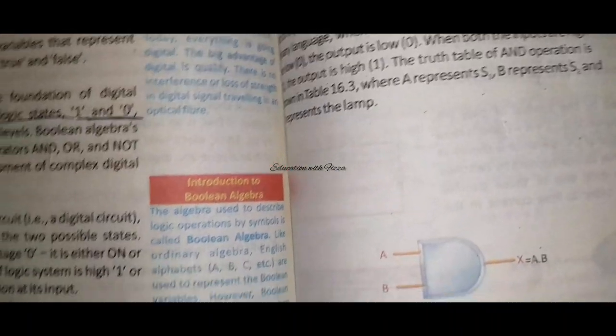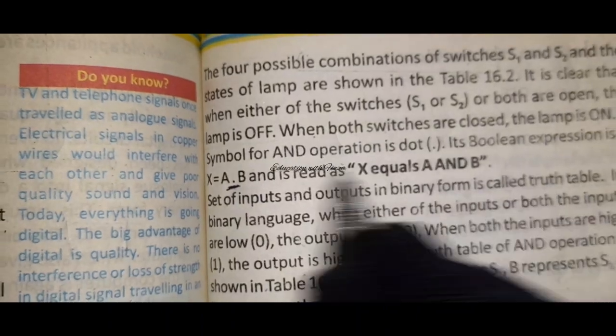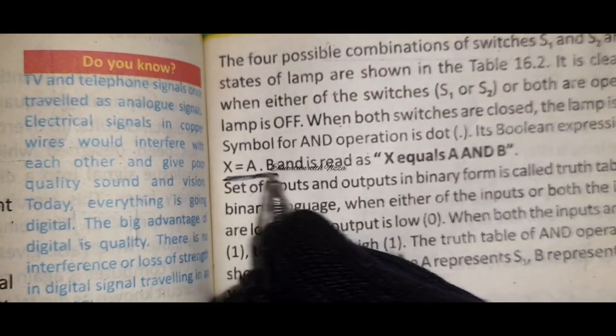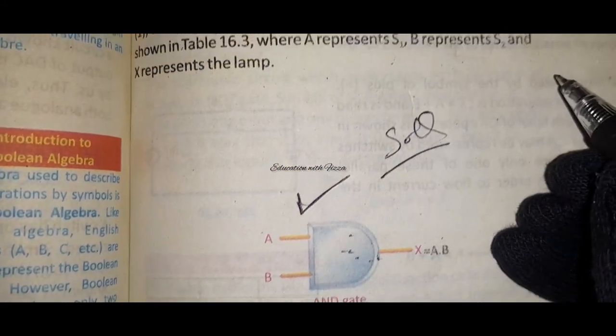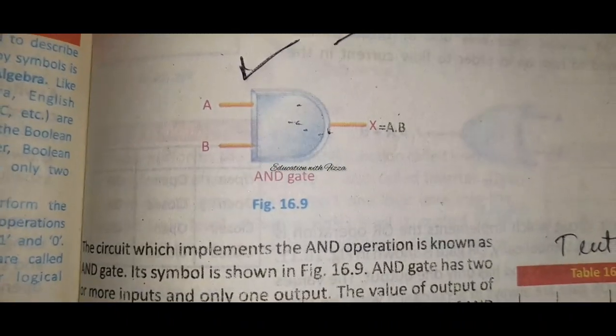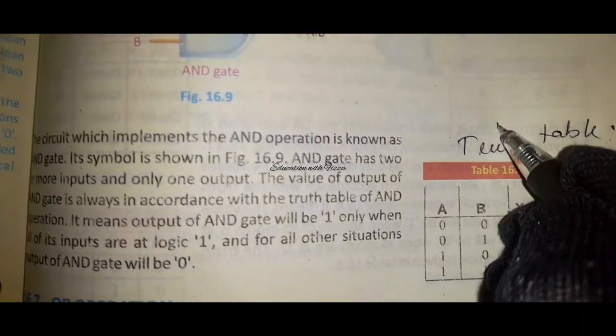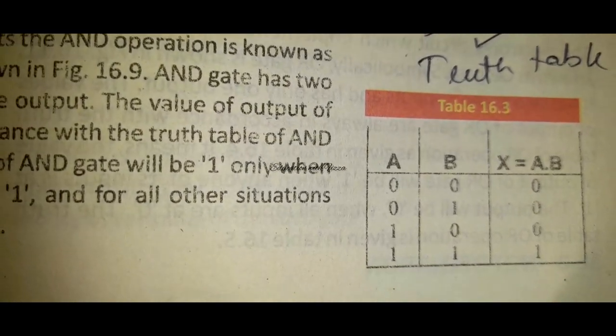From the operations section, what can come as a short question are the symbols and diagrams of the operations. For AND operation, the symbol is a dot, written as X = A·B. This diagram you must know for short questions. The most important short question from this section is the truth table - you should know the truth table for AND operation, OR operation, and NOT operation. You must be able to draw and complete the truth table.